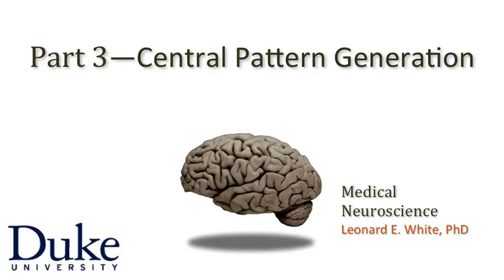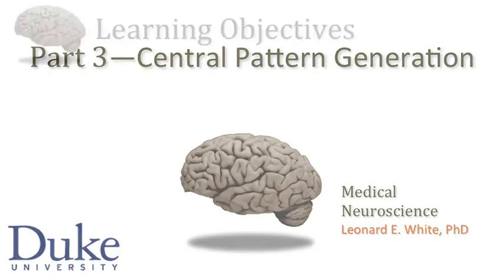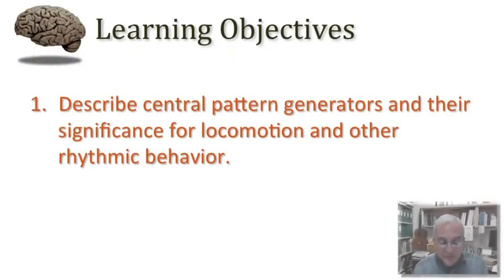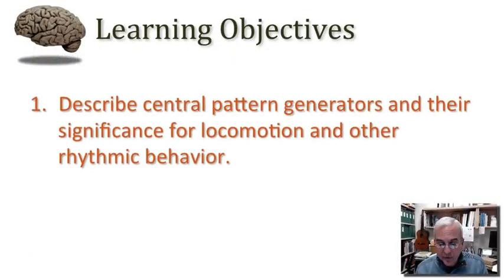In this third part of our tutorial on lower motor neuronal control of movement, I'd like to talk about central pattern generation. Our learning objective is simply to describe central pattern generators and their significance for locomotion and other forms of rhythmic behavior.